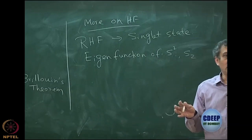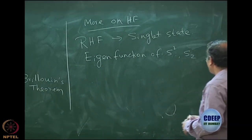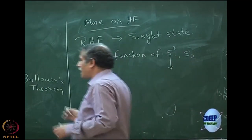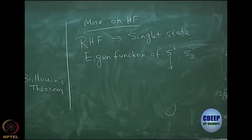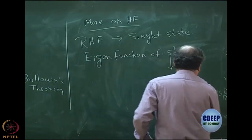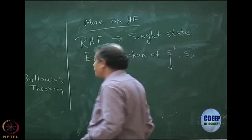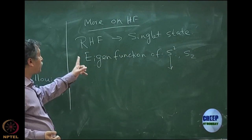These are the two eigenvalues that you get. When you do S-squared, the capital S in S(S+1) is 0, so that is why it is called a singlet. There is an important theorem for a determinant - when is a determinant spin-adapted?